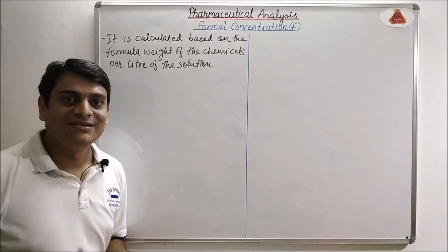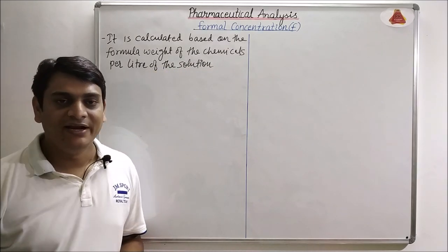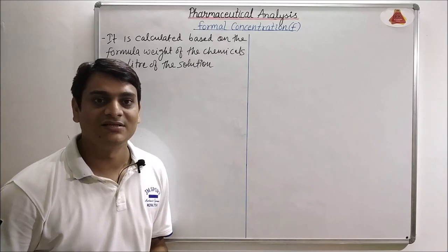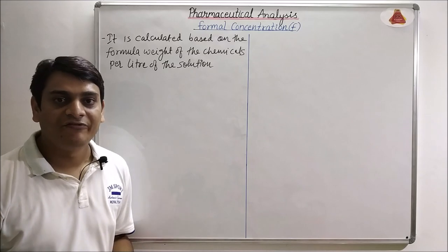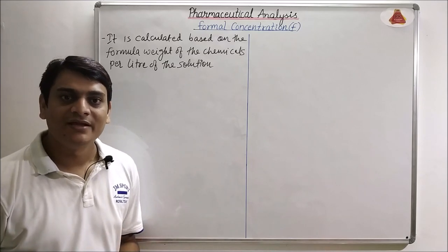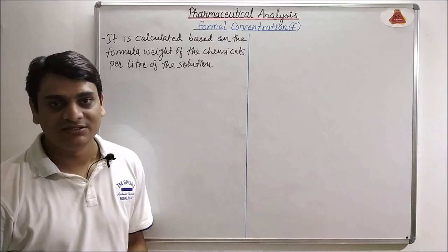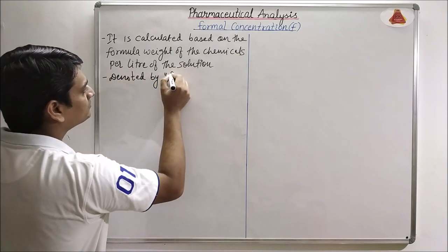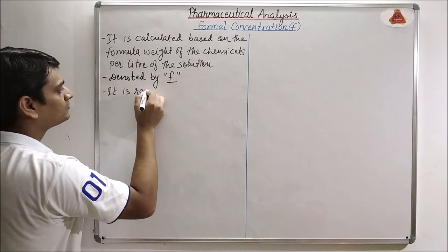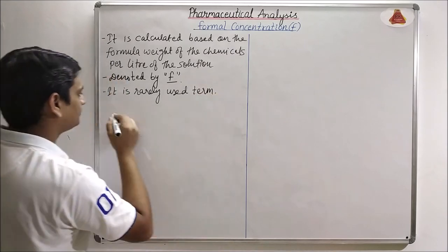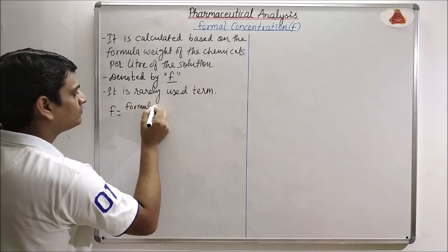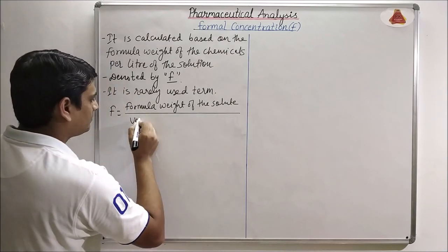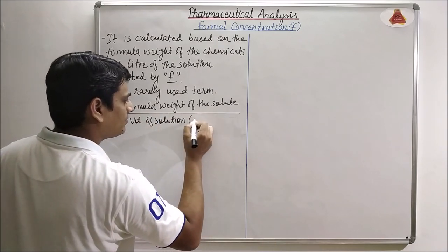Formal concentration is denoted by capital F and it is a rarely used term. The formula for formal concentration is equal to formula weight of the solute divided by volume of the solution in liters.